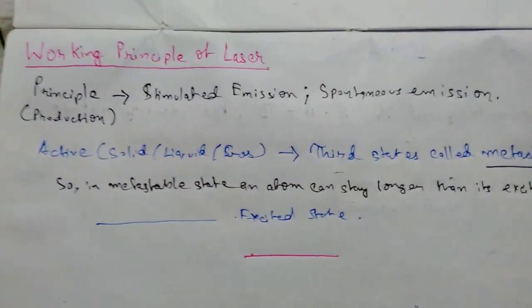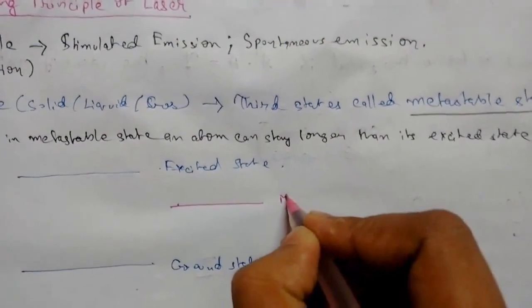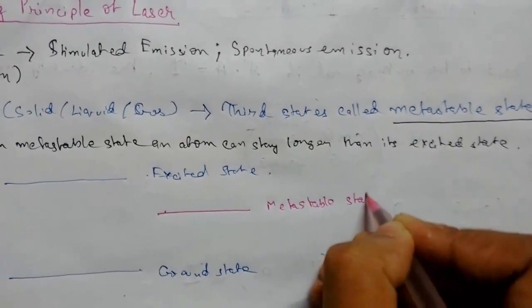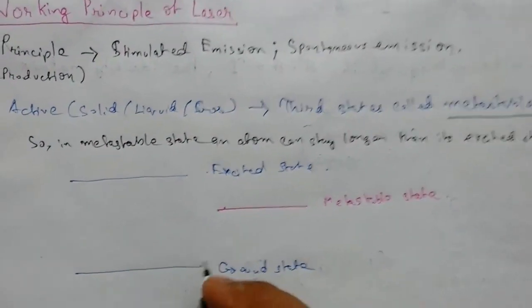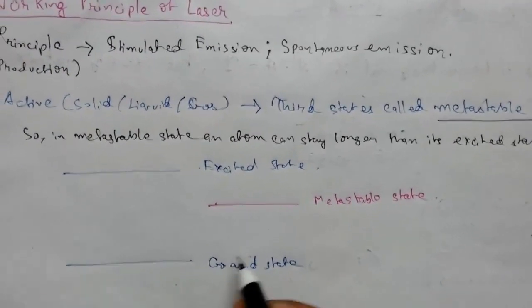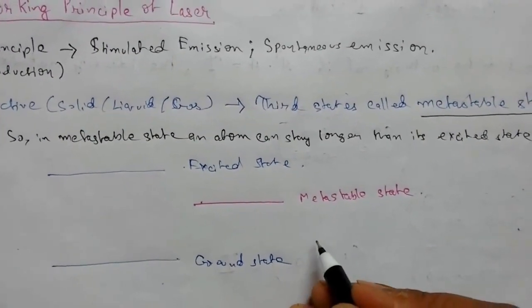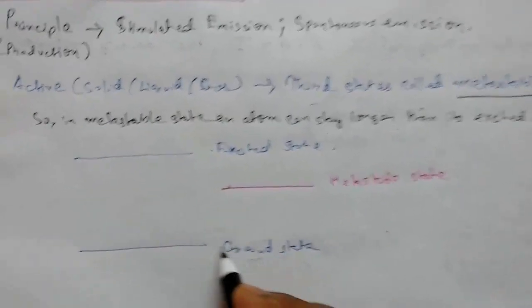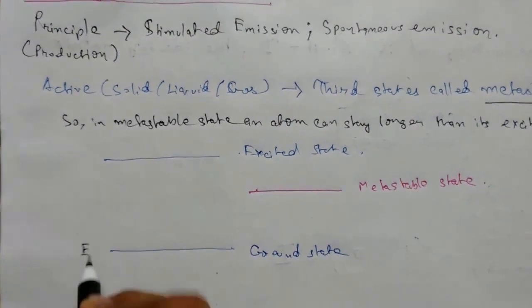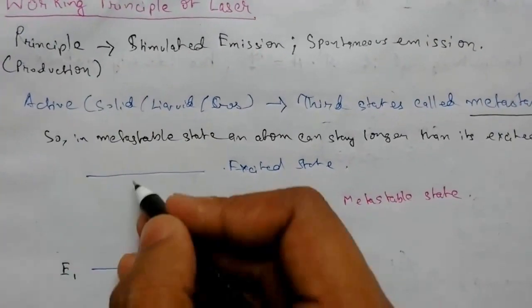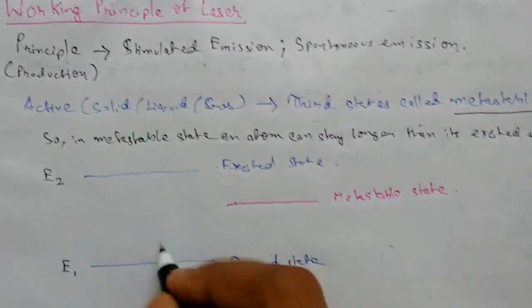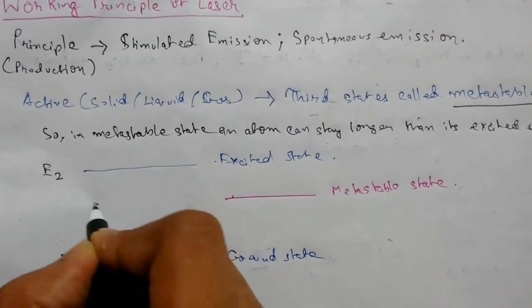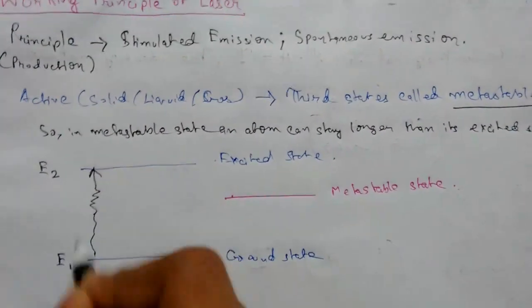The excited state is here, and our third state, which is called the metastable state, will lie somewhere between them. Let me rename and label it as the metastable state. Now we consider an atom — we consider a photon of suitable wavelength, and the atoms in the low energy state E1 jump to the excited state E2 by absorption of photons.